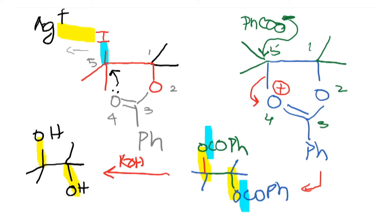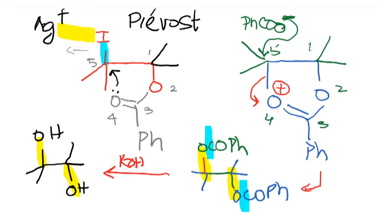This reaction has a name — it's called the Prévost reaction (P-R-E-V-O-S-T). The name is important because it is a named reaction due to its significance in organic chemistry. The Prévost reaction uses I2 and silver benzoate to give the anti-diol.